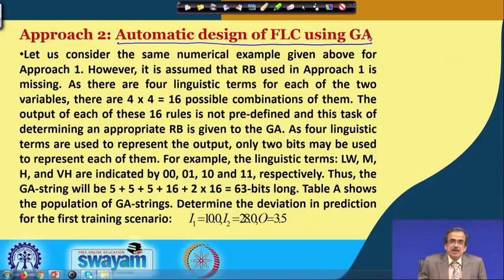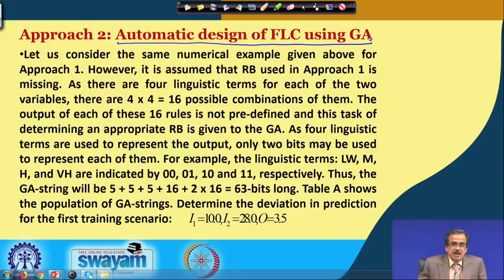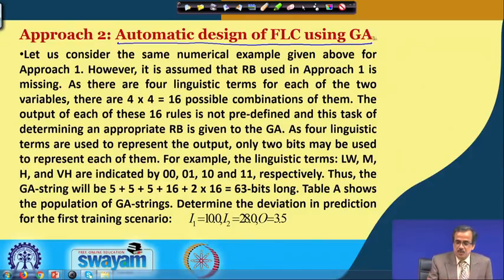In approach two, we do not determine the rule base of the fuzzy reasoning tool or fuzzy logic controller beforehand, because we do not have sufficient information of the process to be controlled. The whole task of designing the rule base is given to the genetic algorithm. Through a large number of iterations, GA will try to evolve what should be the optimal database and optimal rule base of the fuzzy reasoning tool, so that it can make predictions as accurately as possible.